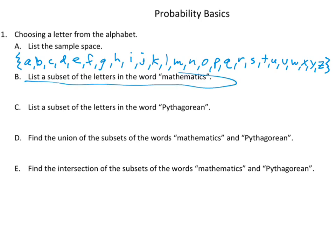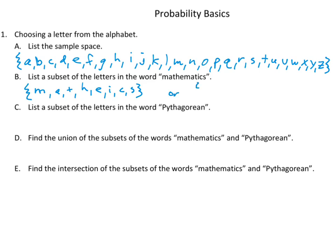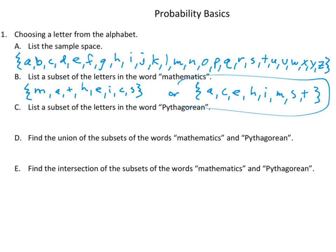Moving on to part B, we're going to list the subset of the letters in the word 'mathematics.' You're not going to put any repeats — don't put repeats. You could put these out of order: M, A, T, H, E — don't write M again, don't write A again, don't write T again — then I, C, and S. Or you can put this in alphabetical order: A, C, E, H, I, M, S, and T. I prefer alphabetical order because if you put things in the same order, it's easy to see what's the same and what's not.